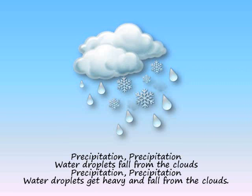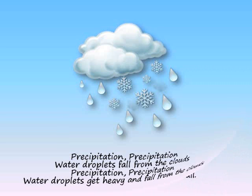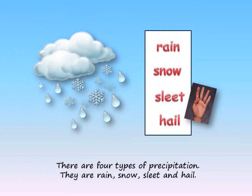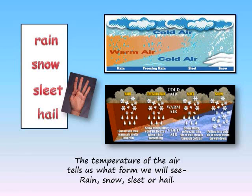Precipitation! Precipitation! Water droplets fall from the clouds. Water droplets get heavy and fall from the clouds. There are four types of precipitation. They are rain, snow, sleet, and hail. The temperature of the air tells us what form we will see: rain, snow, sleet, or hail.